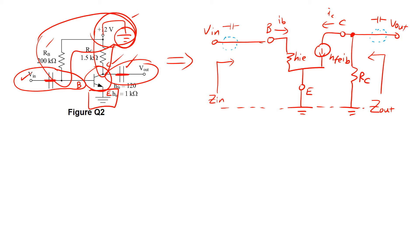We still have one more branch at the base terminal. This branch will pass through RB in series, as well as ground pointing upwards. Again, we cannot have ground pointing upwards — we need to flip this ground down because ground should be downwards, not upwards. So we flip RB down, and this is where RB is located now. With this, we have already drawn the H-parameter equivalent circuit for figure Q2, and this is just part A.